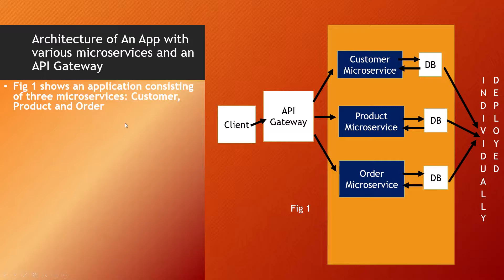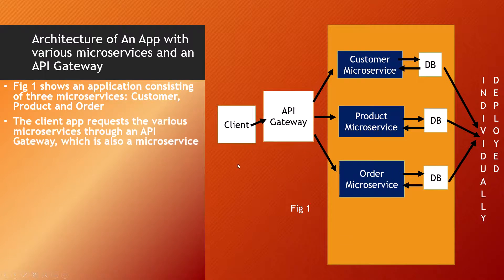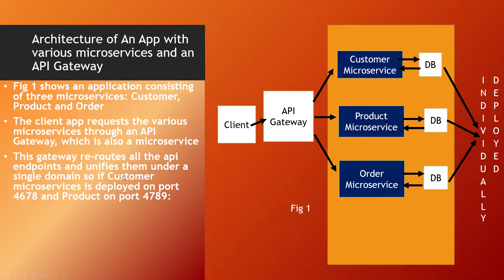This figure shows an application consisting of three microservices: a customer microservice with a database, a product microservice with its own database, and similarly an order microservice. The client app requests the various microservices through an API gateway, which is also a microservice. This gateway reroutes all the API endpoints and unifies them under a single domain.